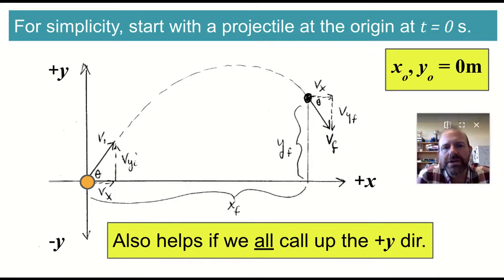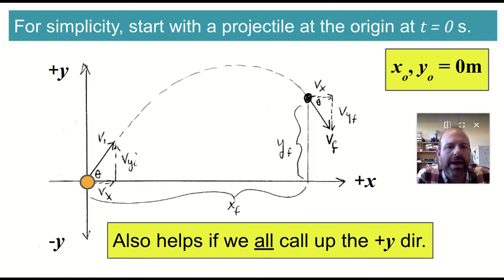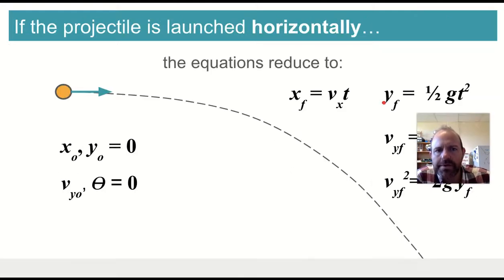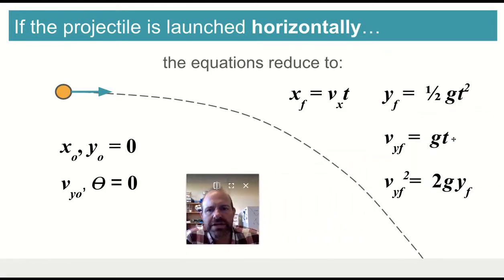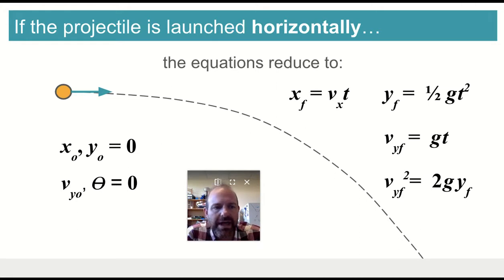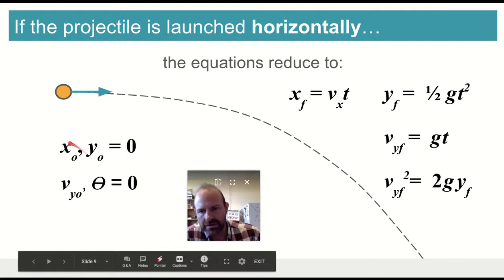Here's an example. If we start with the projectile at the origin — what we'd call zero — with up as positive y and right as positive x, that's pretty standard, and gives us a starting place where we know what our zeros are. If the projectile is launched horizontally, the equations get really simple: x-final equals vx times t, and y-final is one-half g t-squared as it falls down. Vy-final equals g times t, and vy-final squared equals 2g times y-final — again, with the origin at the initial position and zero launch angle.